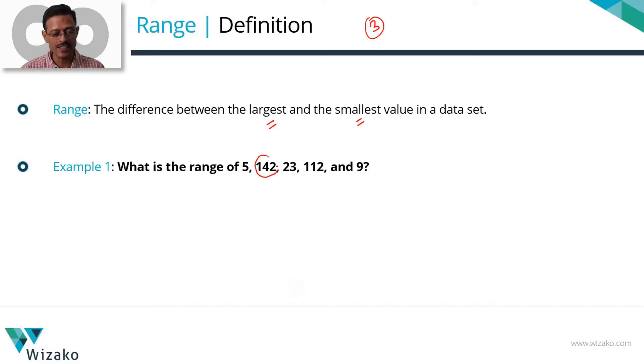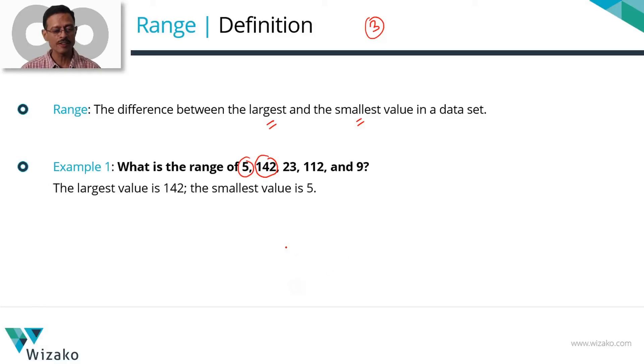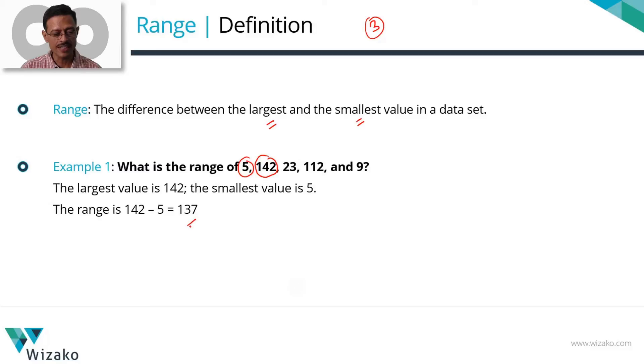The largest number in this data set is 142. The smallest value among these observations is 5. So the difference between 142 and 5 is 137, which is the range for this set of numbers.